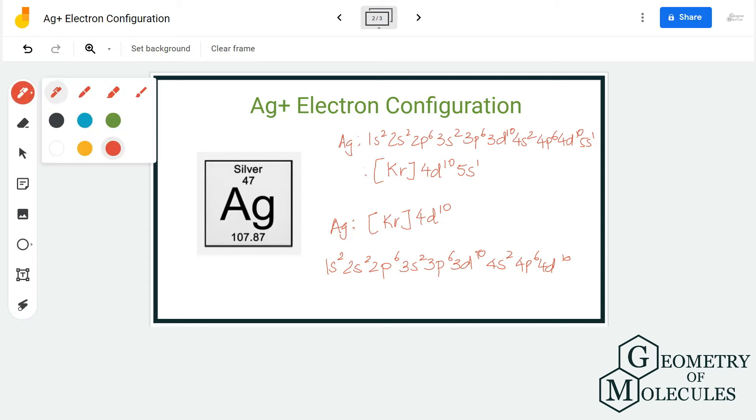Here you can see that d orbitals are filled and s orbitals are half filled. Because half filled or completely filled d orbitals are more stable than those with one electron less, we have a complete d orbital here and there is one excess electron in the 5s orbital.